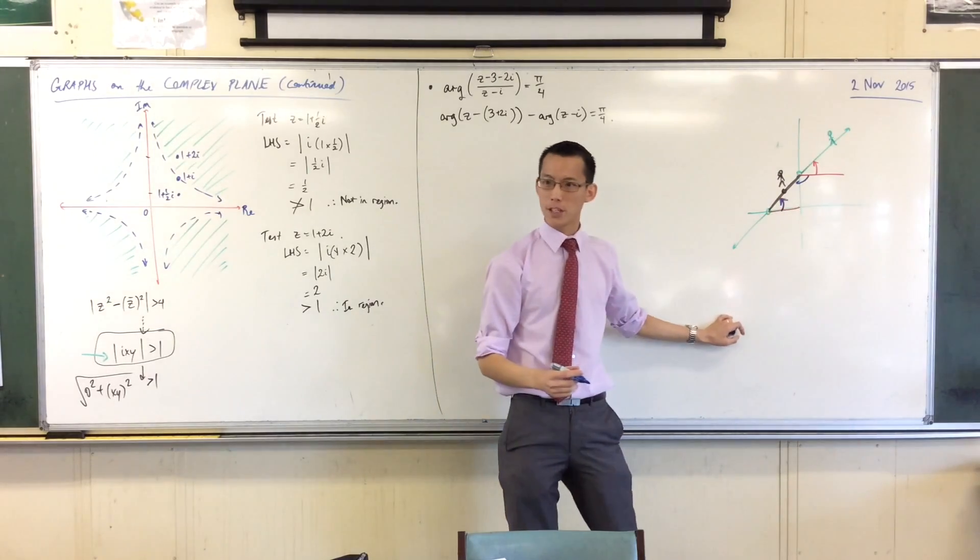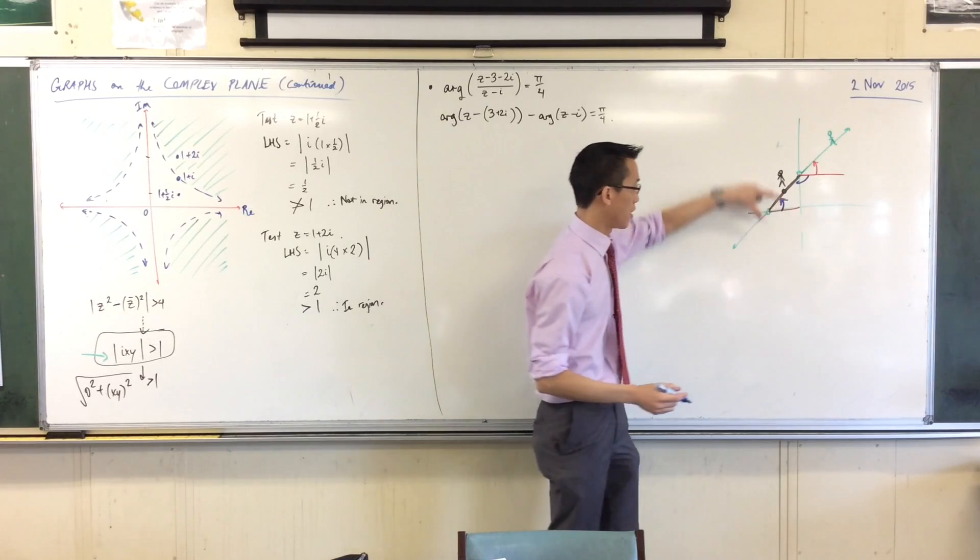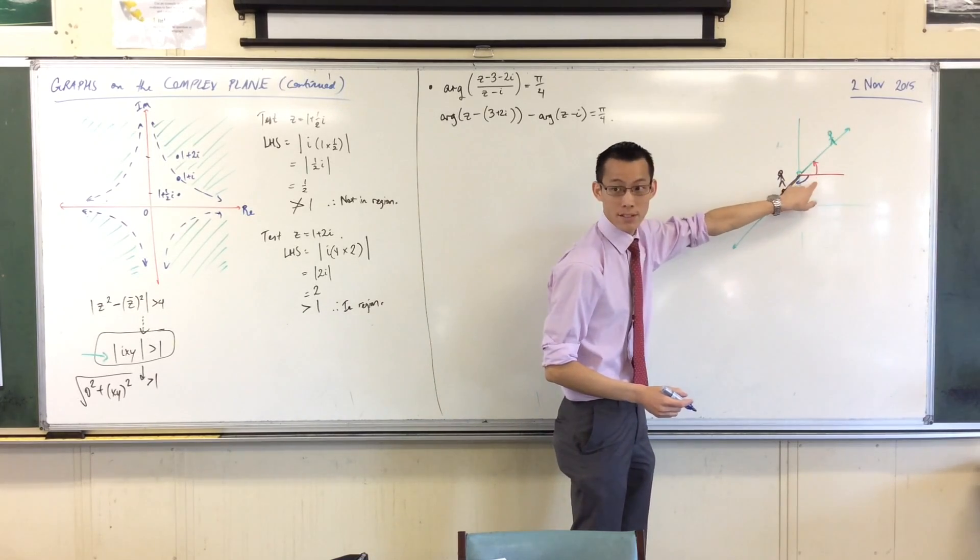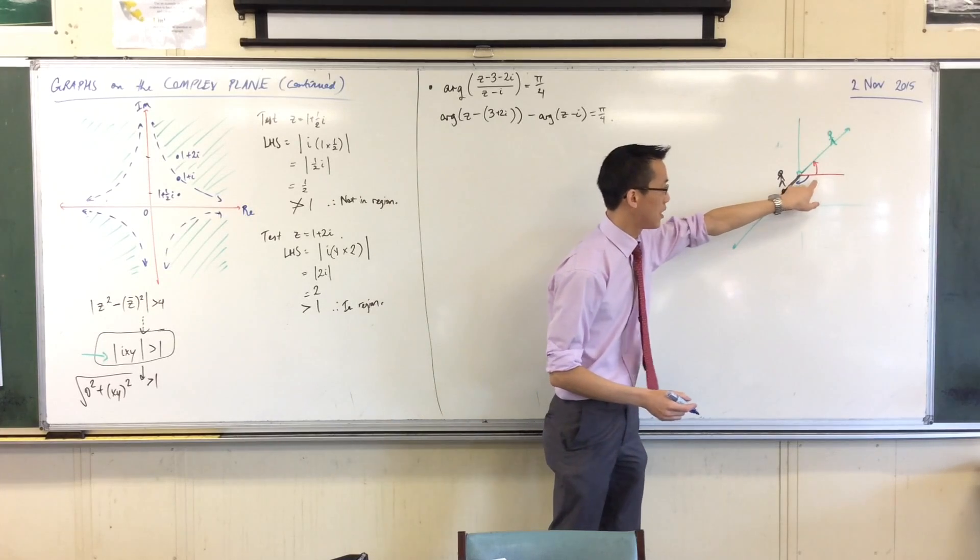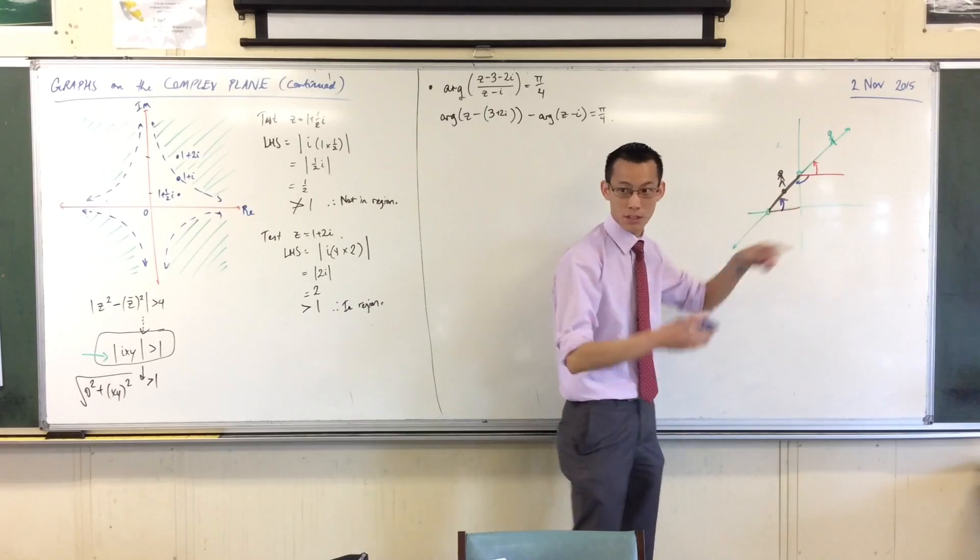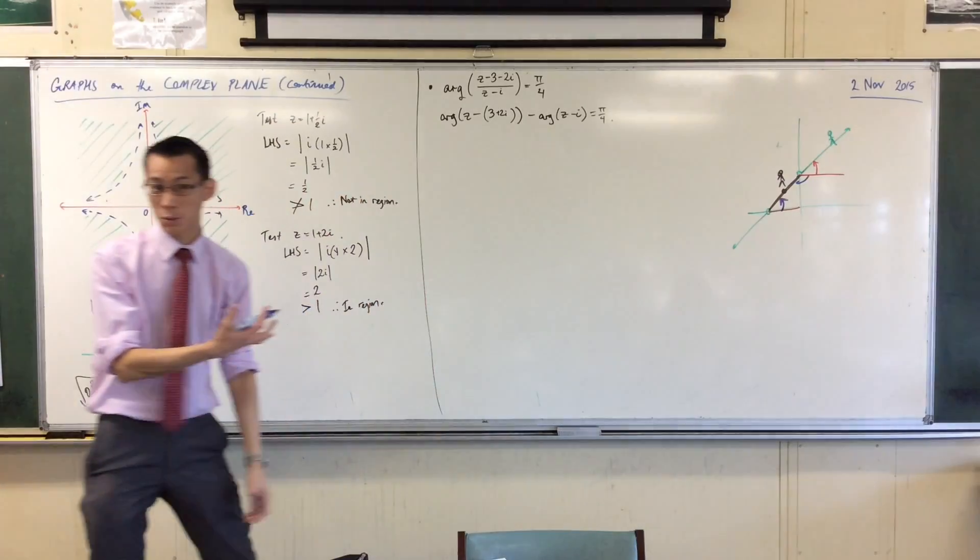But when you take the difference between these two, do you see what's happening? This is a negative. So if I was going from here to here, I'm going to be having a small part minus that negative one, which gives you pi, because it's going to be 180 degrees.